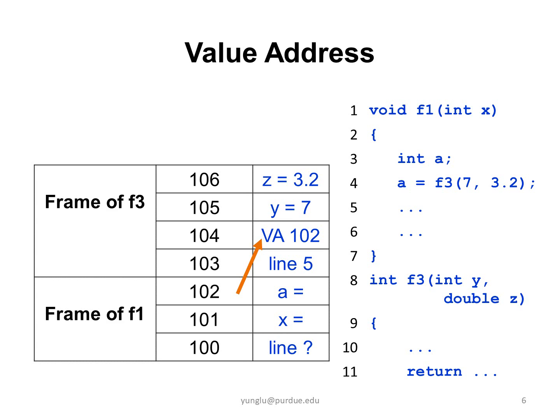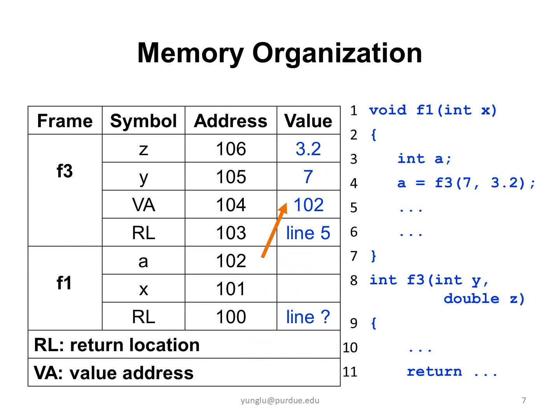The address of local variable A is 102. When function F3 finishes and returns an integer, this value integer is written to F1's local variable A. The address of A is 102. This is the value address. Earlier, I said computer memory is organized as address value pairs. However, this slide does not show address value pairs. The next slide explains how to map the concept to address value pairs.